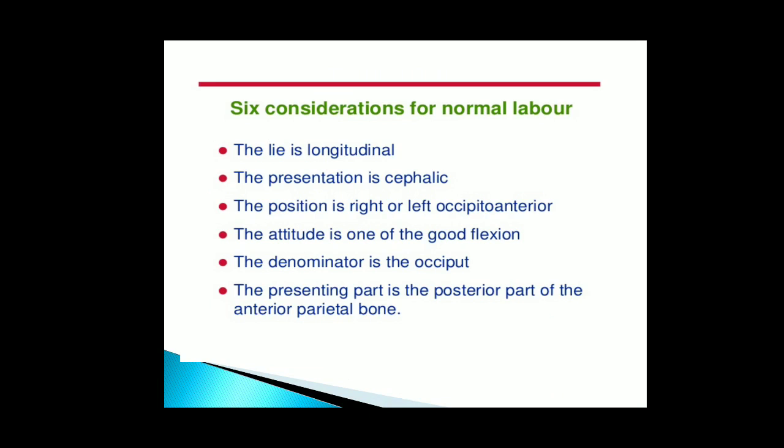There are six criteria of the mechanism of labor. The lie is longitudinal. The presentation is cephalic. The position is right or left occiput anterior. The attitude is one of good flexion. The denominator is the occiput. The presenting part is the posterior part of the anterior parietal bone.